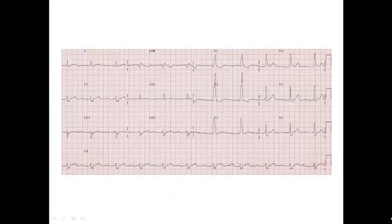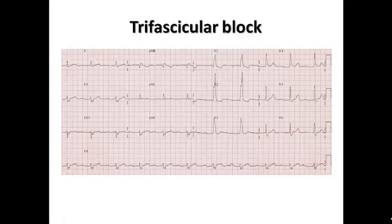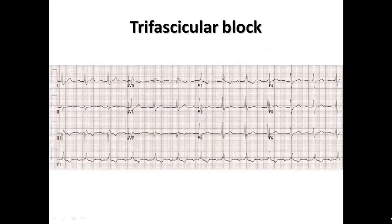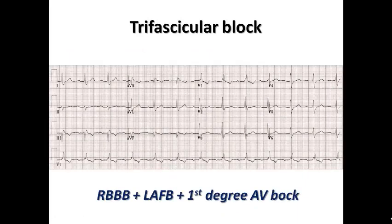Using the first definition, trifascicular block means complete right bundle branch block plus left anterior fascicular block — indicated by left axis deviation — plus first degree AV block with PR interval more than 200 milliseconds. Sometimes it may instead be left posterior fascicular block. As seen in most ECG examples here, it is left anterior fascicular block because it is much more common than left posterior fascicular block.